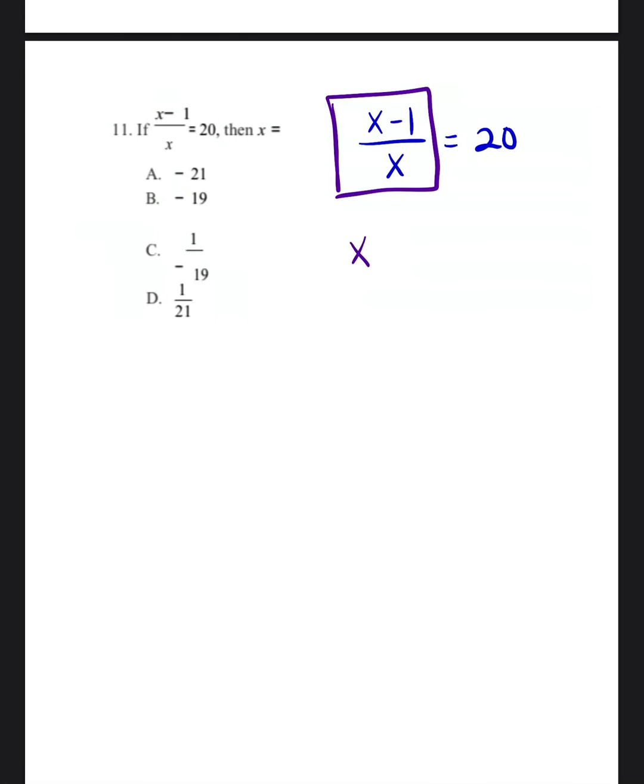So if you ever want to get rid of a fraction, what you do is you multiply both sides of the equation by the denominator. The denominator is whatever is on the bottom of the fraction. So if I want to get rid of a fraction, I'm going to multiply both sides by x. So when I multiply x times x over 1 over x, these x's cancel out. And I'm left with the numerator, x minus 1. And then 20 times x is 20x.